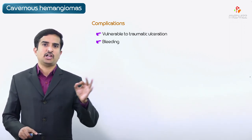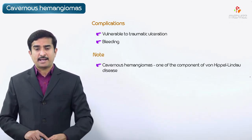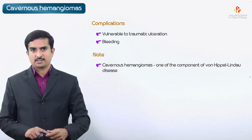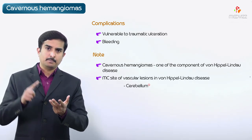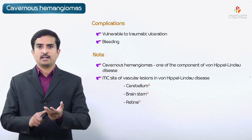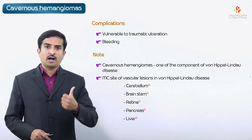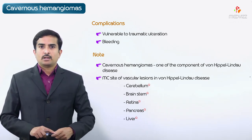More often these tumors are of little clinical significance, but they are cosmetically troublesome and are vulnerable to traumatic ulcerations as well as bleeding — these are the complications. Additionally, cavernous hemangiomas constitute one of the common components of Von Hippel-Lindau disease, in which vascular lesions are commonly found in the cerebellum, brain stem, retina, pancreas, and liver.